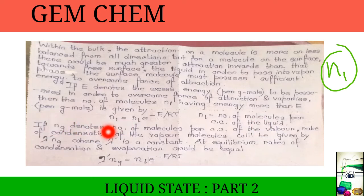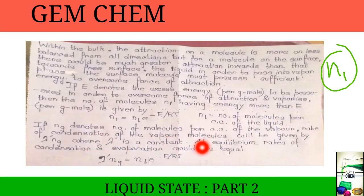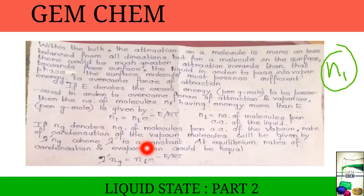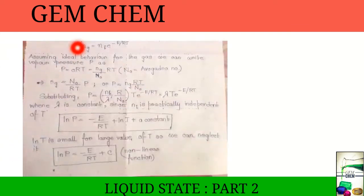If NG is the number of molecules per cm³ of the vapor state, then the rate of condensation of vapor molecules is given by λ'·NG, where λ' is a constant. At equilibrium, the rates of condensation and evaporation are equal. We equalize the two expressions and obtain NG in terms of NL. We then assume that the vapor behaves as an ideal gas.